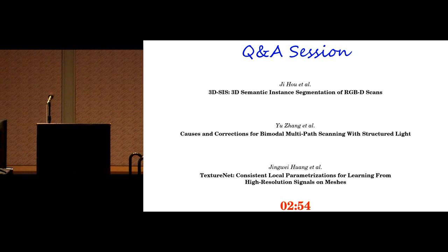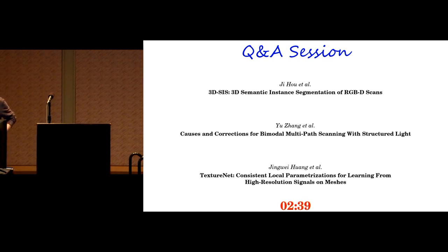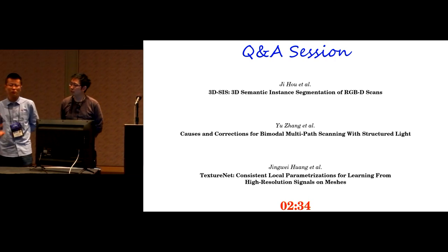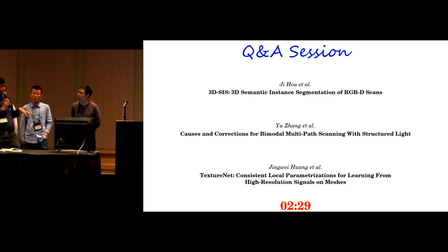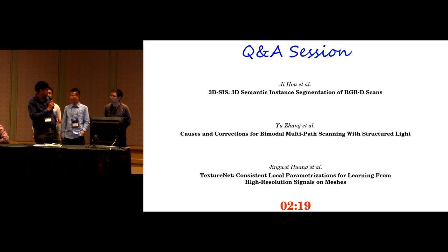We have time for questions. On the first talk: RGB images are view-centric, and geometry is view-agnostic. Do you just project features, or is there some translation to go from view-specific to view-invariant feature space?